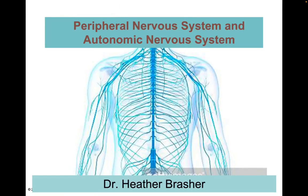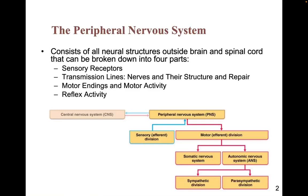Hello everyone. This is Dr. Brasher, and we'll be talking about the peripheral nervous system and the autonomic nervous system. When we look at the peripheral nervous system, this consists of all the neural structures outside the central nervous system — which includes the brain and spinal cord — and it can be broken down into four parts.